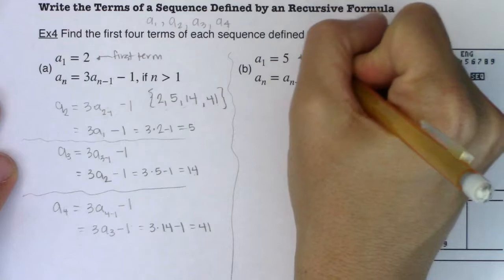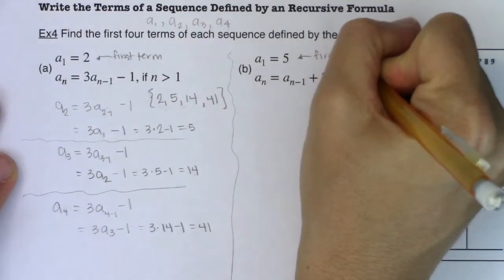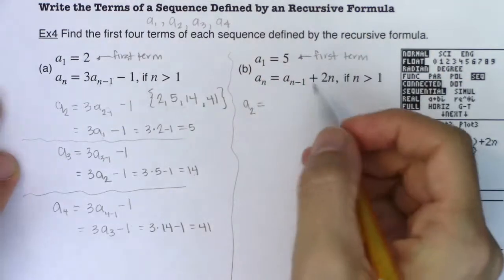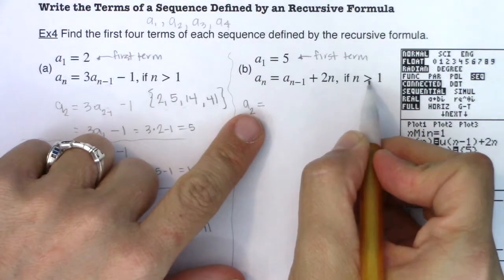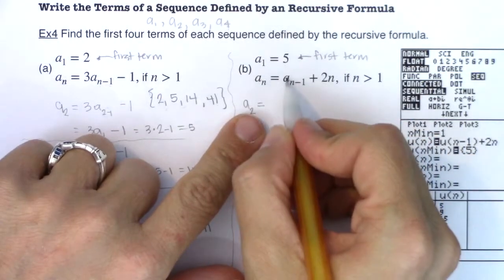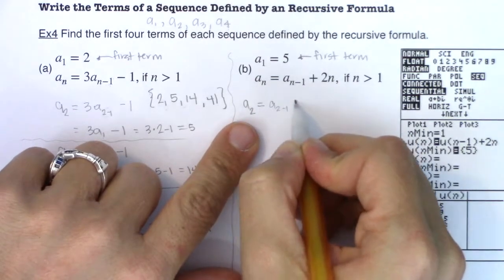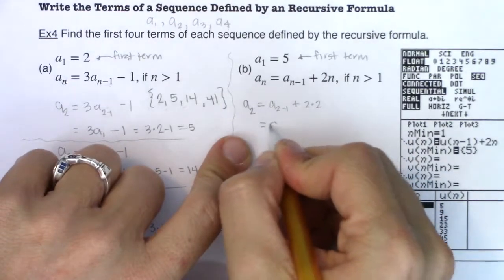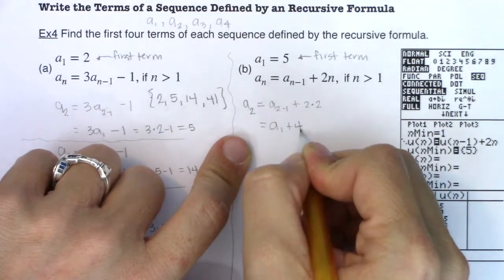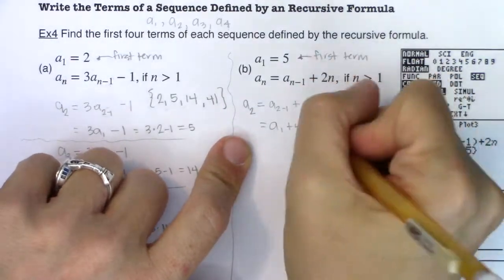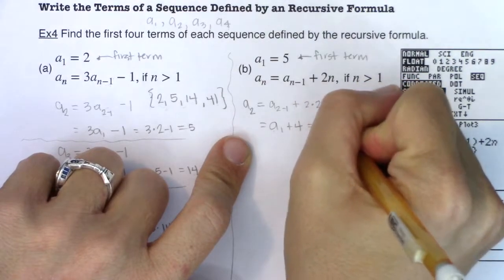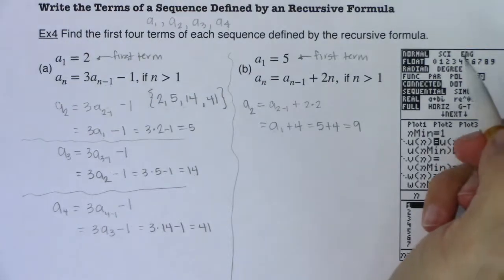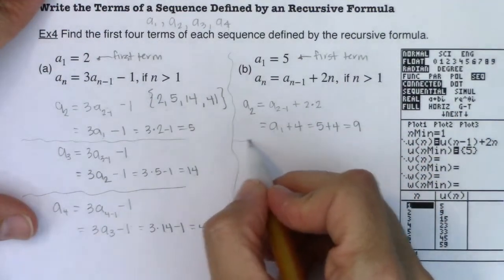Now let's try part B. I'm starting at a₁ = 5 — again I have to be given a starting point. To find a₂, I follow the formula for n greater than 1: a₂ = a(2-1) + 2(2) = a₁ + 4. Since a₁ = 5, this becomes 5 + 4 = 9. So the second term is 9.